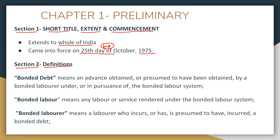The first definition is 'bonded debt.' Debt means a loan or advance. So bonded debt means an advance which is obtained, or presumed to have been obtained, by a bonded laborer — that is, the debt given to moneylenders under the bonded labor system. The loan which has been taken under this system is called bonded debt.